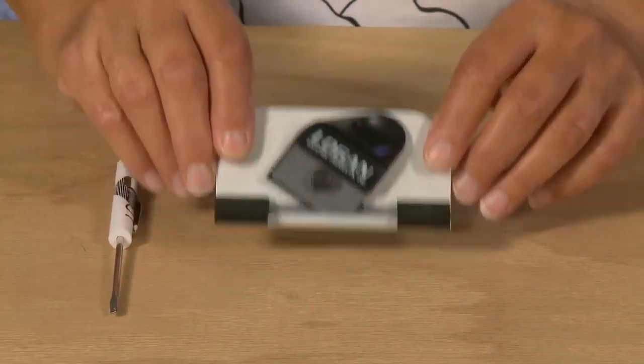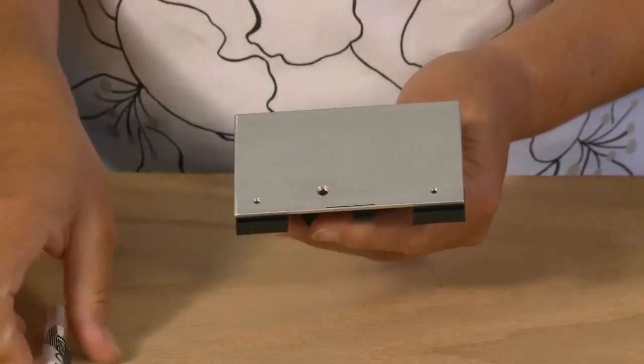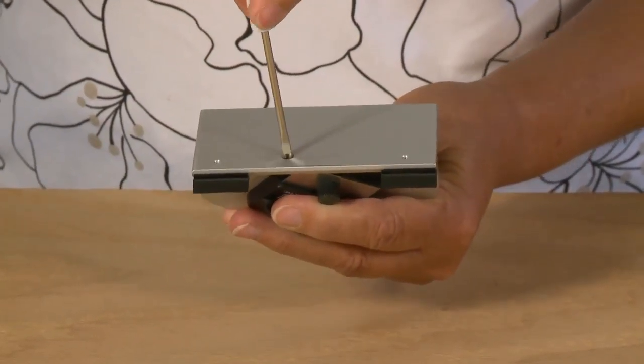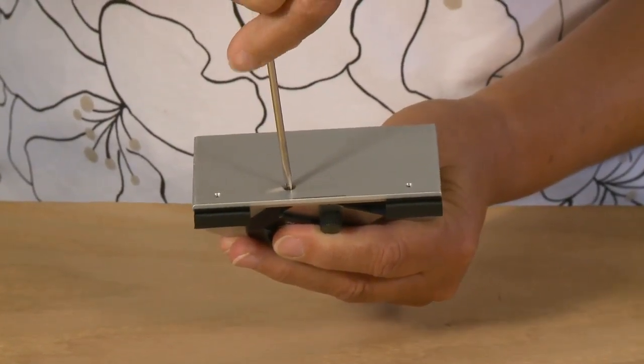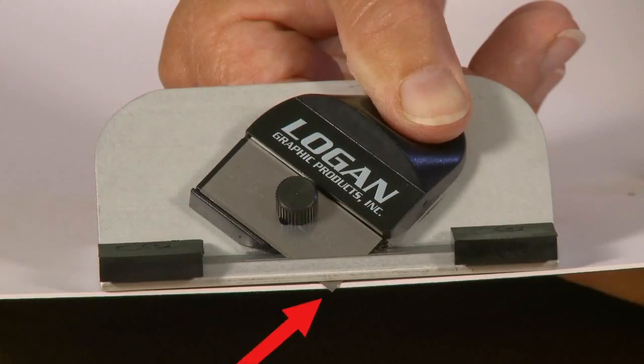To adjust the blade depth on the push style bevel cutter, find the blade depth adjustment screw on the bottom of the cutting head. Using a screwdriver, turning the screw clockwise will decrease the blade depth. See that there is enough blade to barely pass through the mat board you're cutting, and only score into the slip sheet underneath.